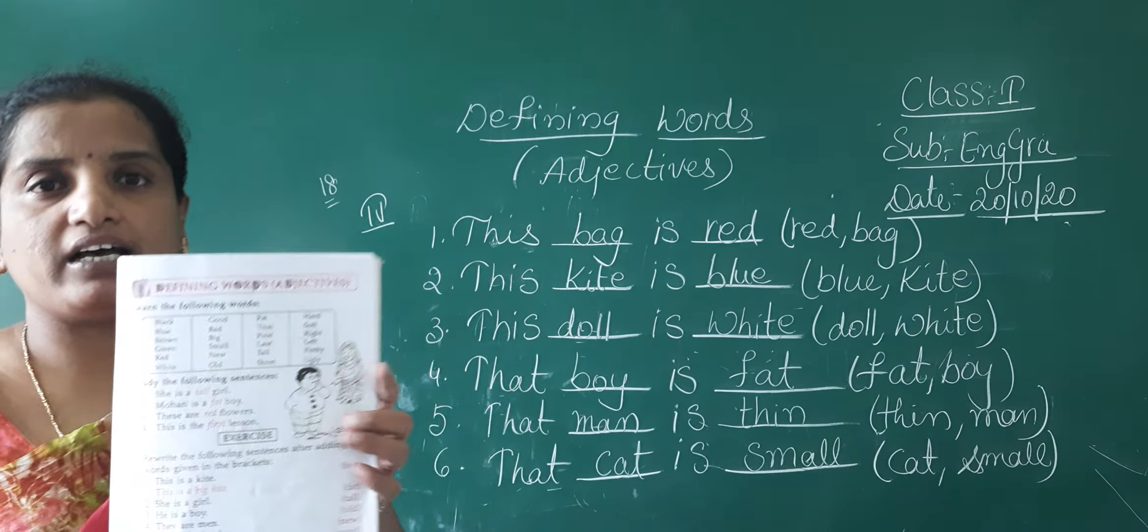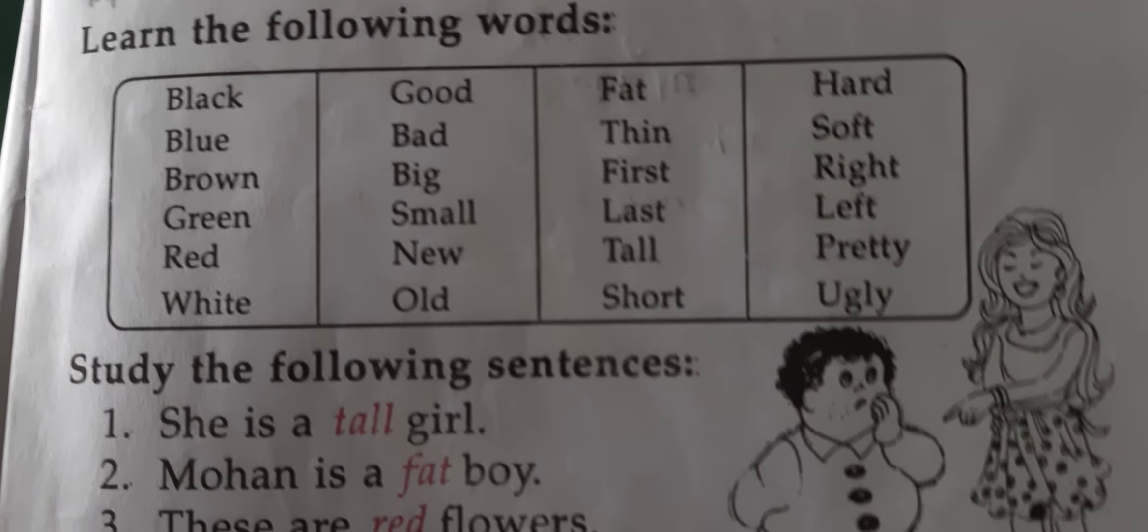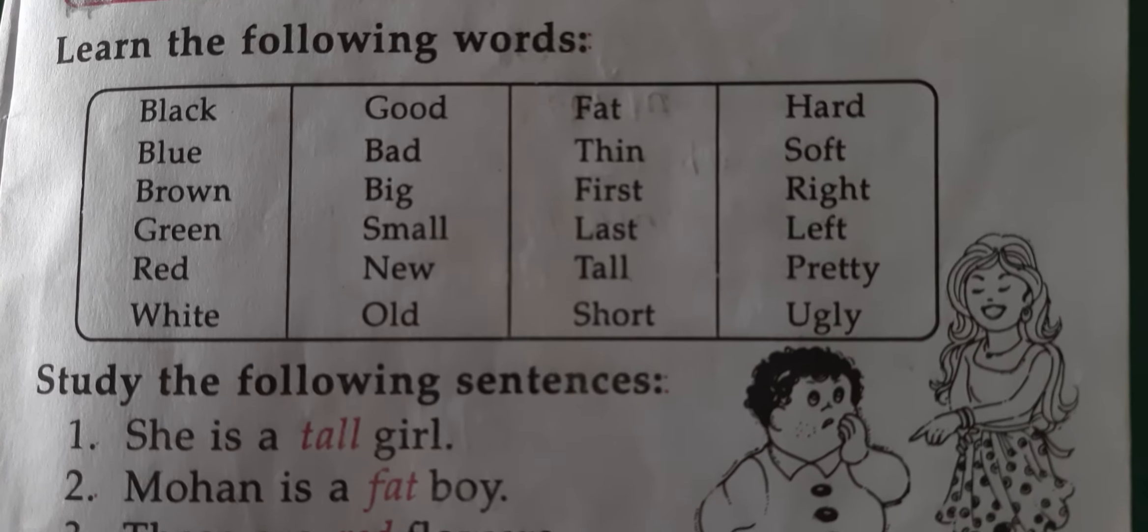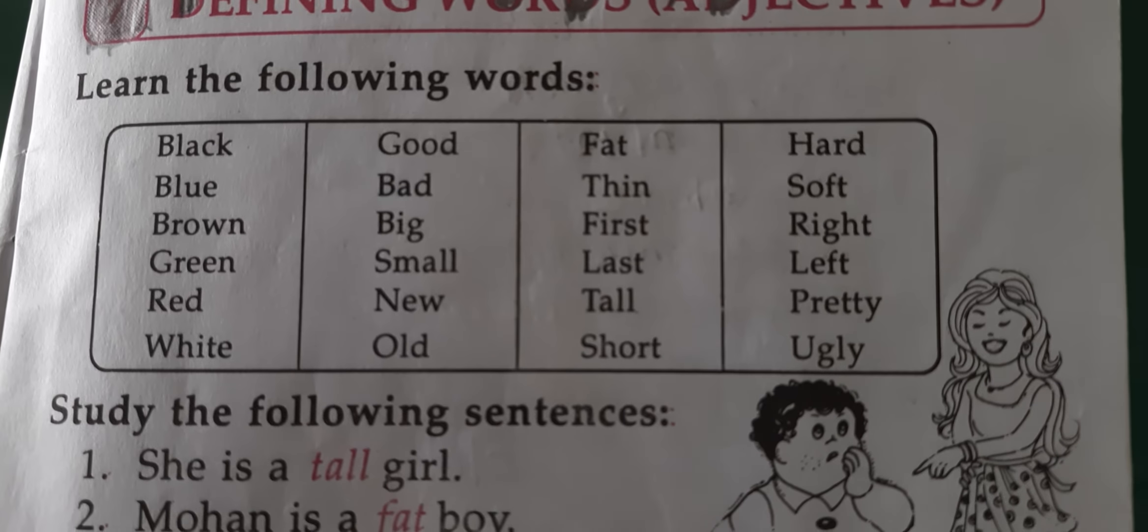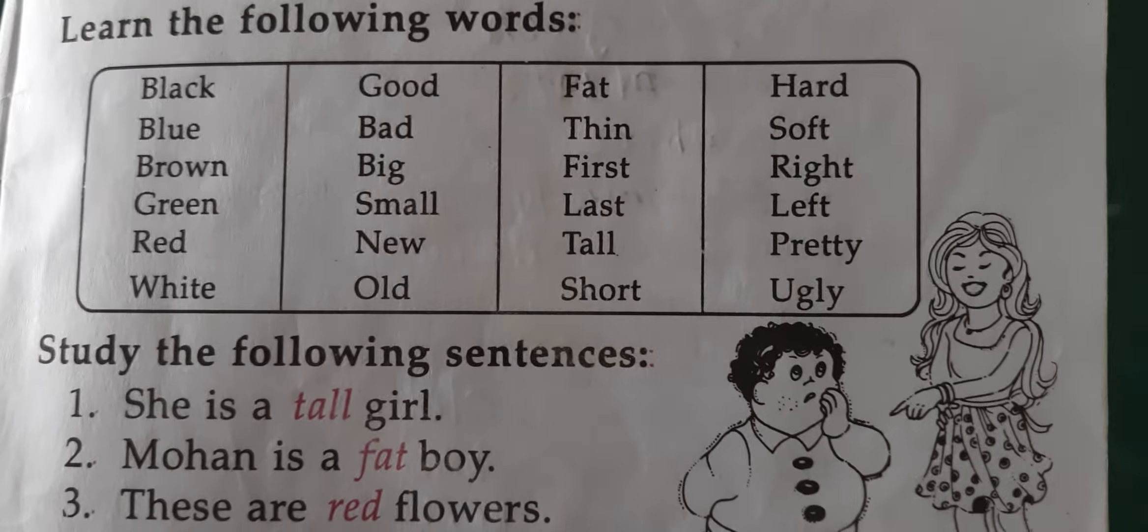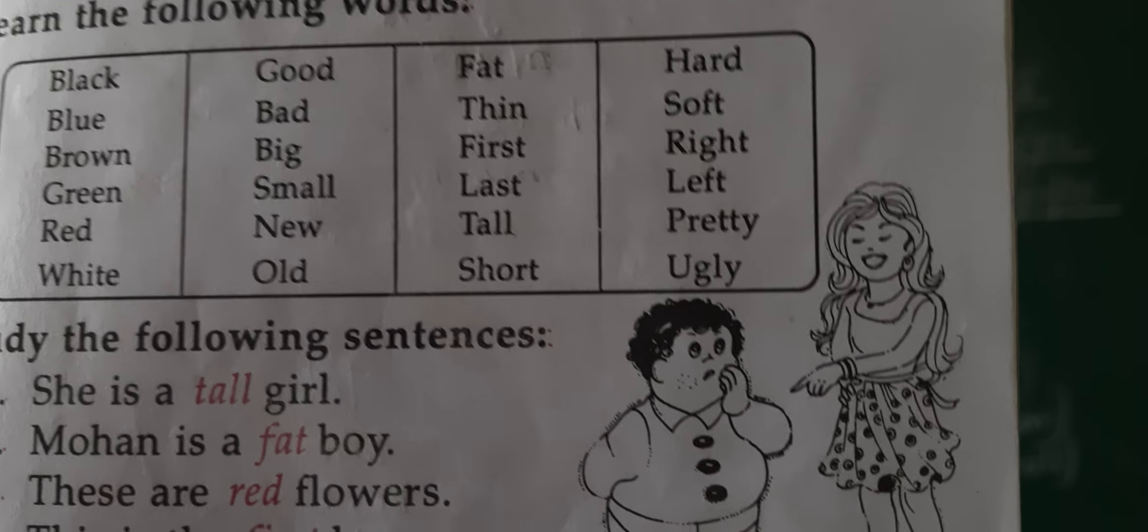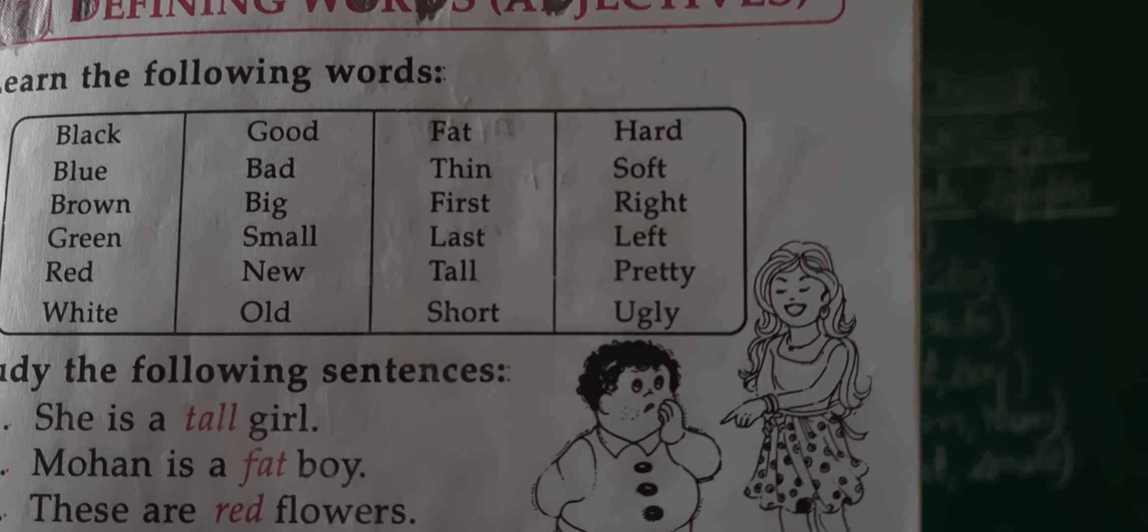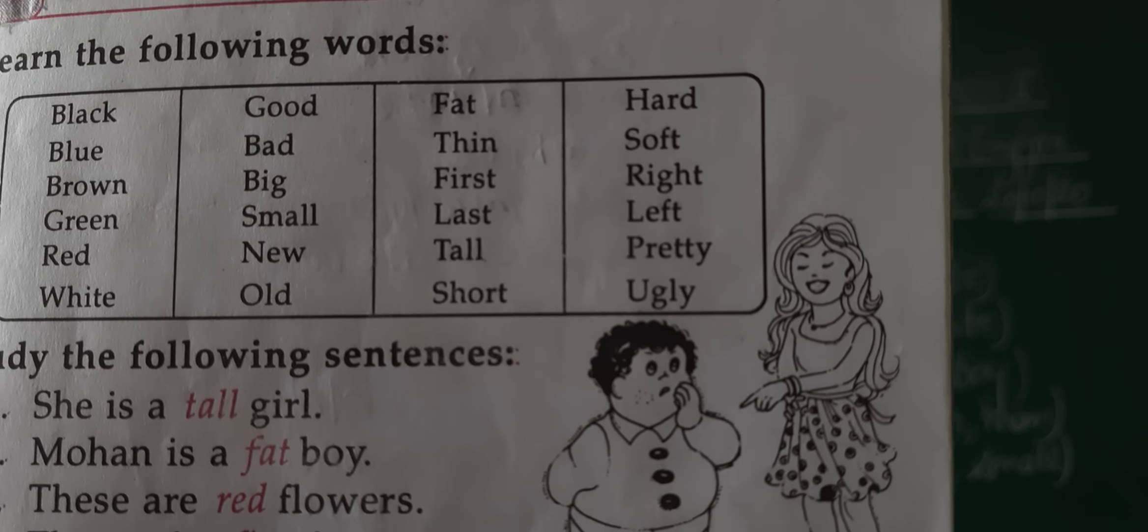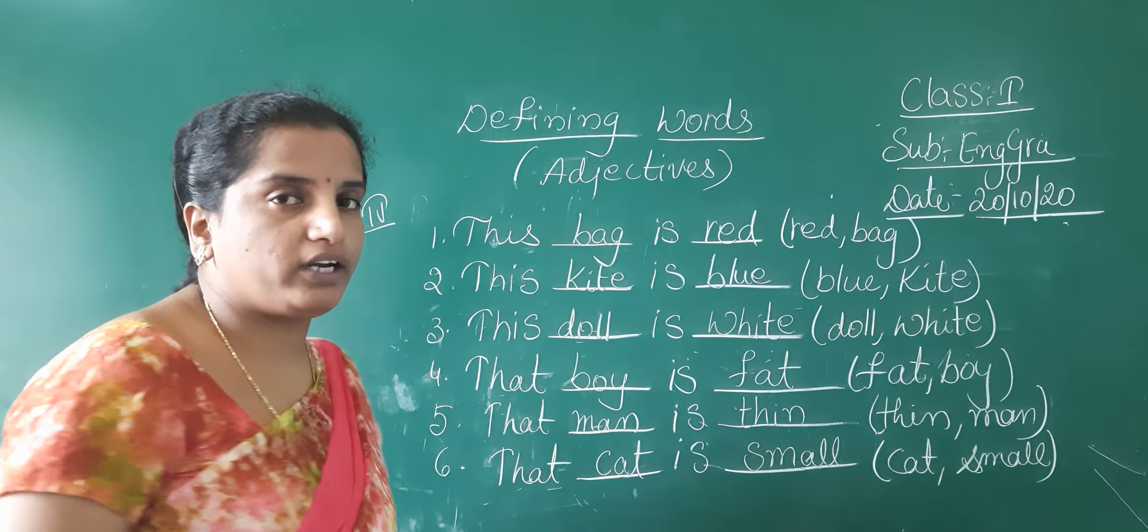Let us revise the adjectives given to you children. These are the adjectives given to you. Before we conclude, let us revise once. Black, blue, brown, green, red, white, good, bad, big, small, new, old, fat, thin, first, last, tall, short, hard, soft, right, left, pretty, ugly. These are known as adjectives. What are they known as? Adjectives.